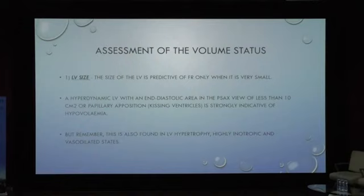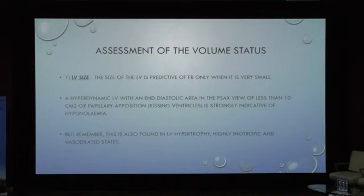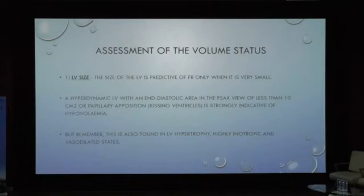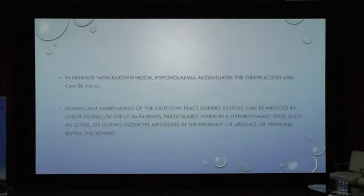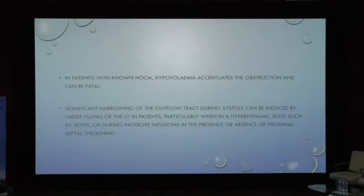Before assessing VTI, first assess volume status. After clinical assessment, look at LV size on echo — the size of the LV is predictive of fluid responsiveness only when it is very small. A hyperkinetic LV with end-diastolic area less than 10 cm², papillary muscle apposition, or kissing ventricles is a strong indicator of hypovolemia. However, these changes can also be found in LV hypertrophy, highly inotropic, and vasodilated states. In patients with HOCM, hypovolemia may accentuate obstruction and can be fatal.